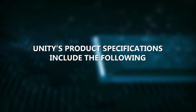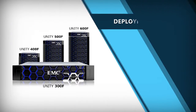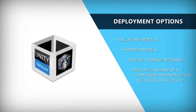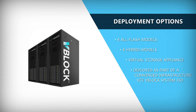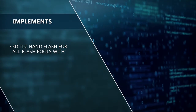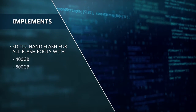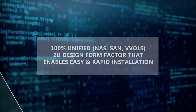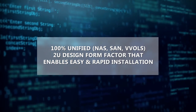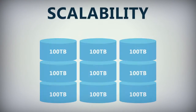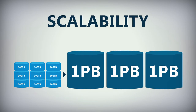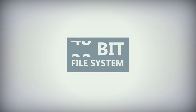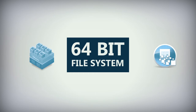Unity's product specifications include the following capabilities and service offerings. Deployment options include four all-flash models and four hybrid models, as well as a virtual storage appliance. Unity will also be deployed as part of a converged infrastructure VCE vBlock. It implements 3D TLC NAND flash for all-flash pools with 400GB, 800GB, and 1.6TB, along with 3.2TB MLC capacity drives. The 100% unified 2U design form factor enables easy and rapid installation. Scalability ranges from 900TB to 3TB capacity, with mixed workload performance up to 295K IOPS in an all-flash configuration.